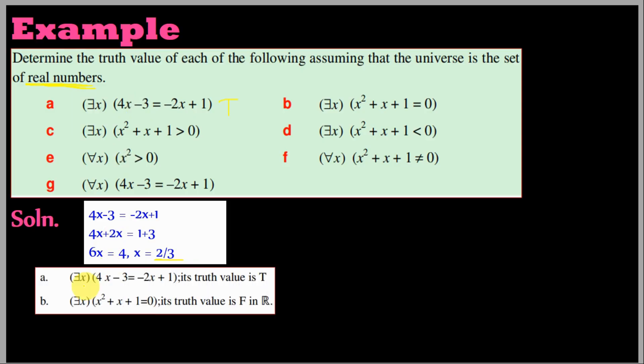Therefore, there exists x such that 4x minus 3 equals minus 2x plus 1. The truth value is TRUE.